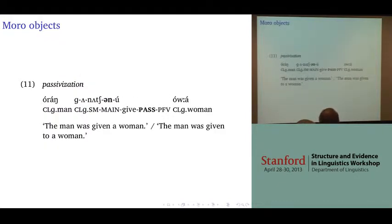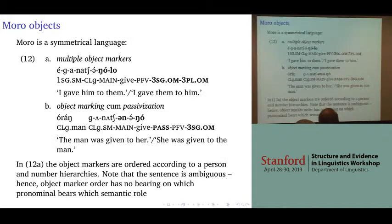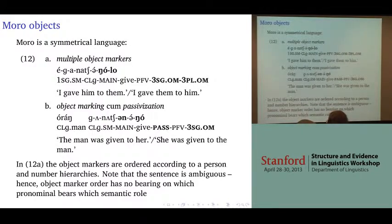In example eleven we have passivization, and again the same ambiguity obtains. Moro is a symmetrical language in the sense that these object properties can be exhibited by both of the objects simultaneously.